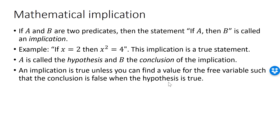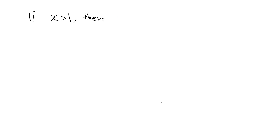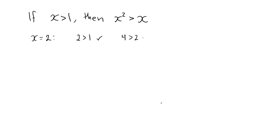Here is another example. If x is greater than 1, then x squared is greater than x. This is a true statement. No matter which value you select for the free variable x, as long as you select one that is greater than 1, then the square of this value must be greater than the value itself. For example, if x is 2, then x squared is 4, which is greater than 2. Replace 2 with any other number greater than 1, and the same is true.